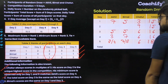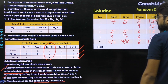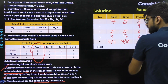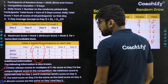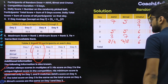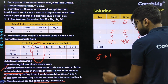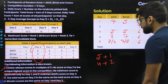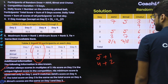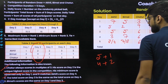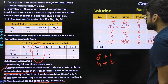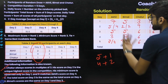For day 2, the sum of Akhil and Bimal is 6 (since total is 15 and Chatur scores 9). Chatur has rank 1, Akhil rank 2, and Bimal rank 3. The ways to make 6 with Akhil scoring more than Bimal are: Akhil=5, Bimal=1, or Akhil=4, Bimal=2. (3 and 3 is not valid since they have different ranks.)